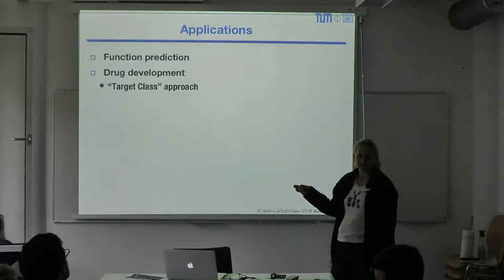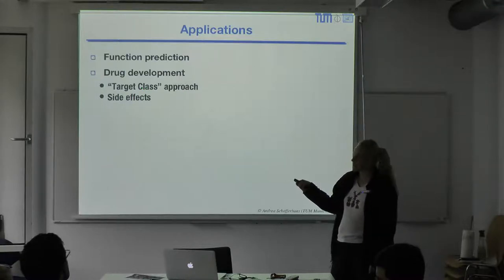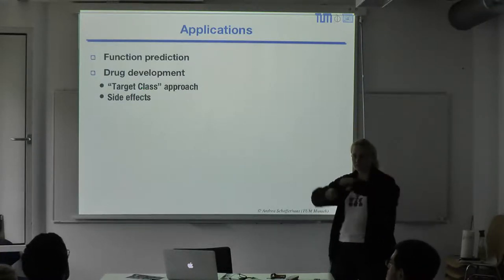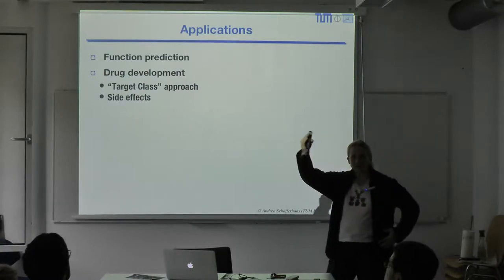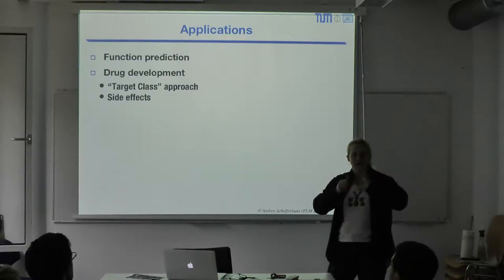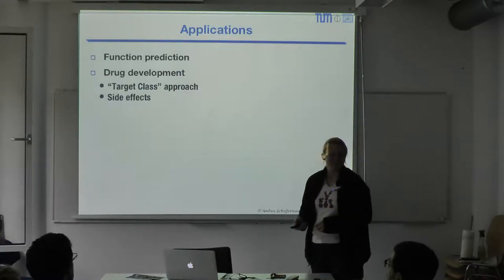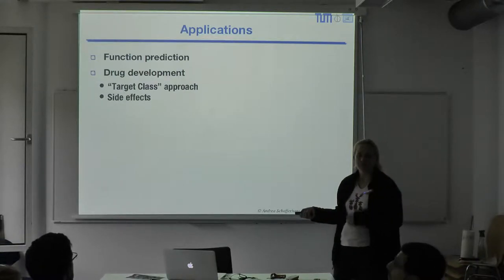One application is function prediction. Another is drug development, where people explore target classes — they don't just take one protein from a family but take a number of them. When they make compounds that might bind one, they can also test against the others, leveraging the cost. Another application is predicting side effects.